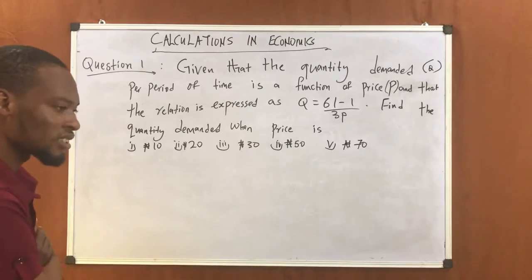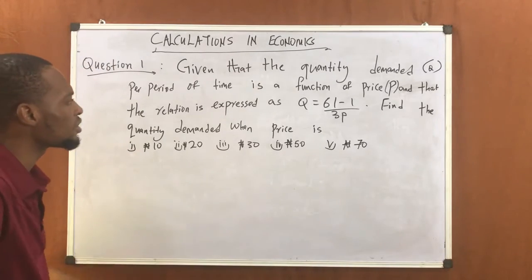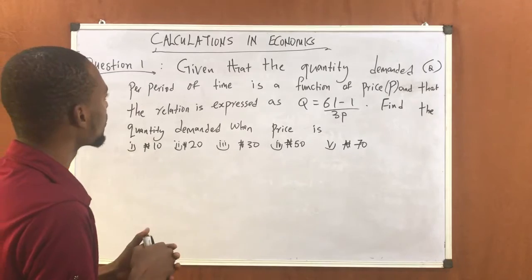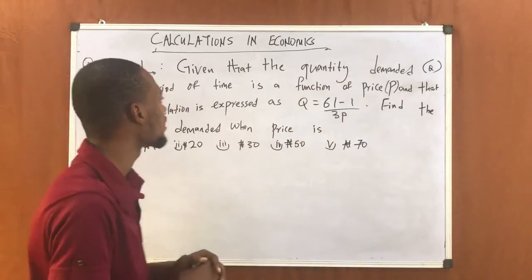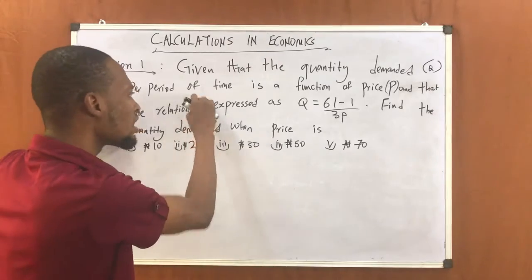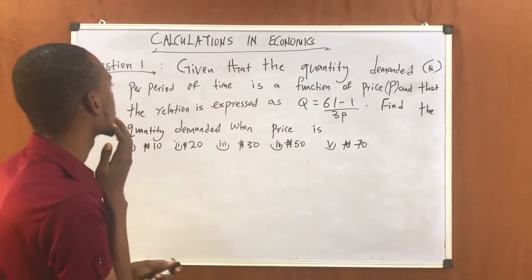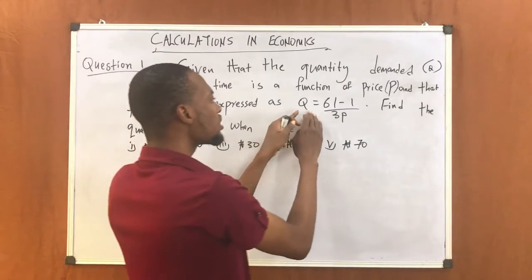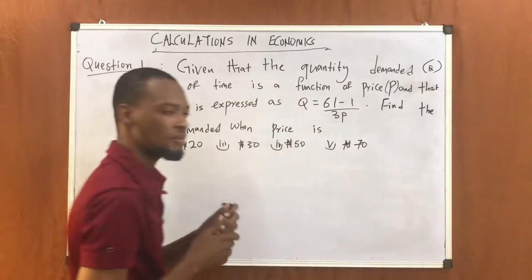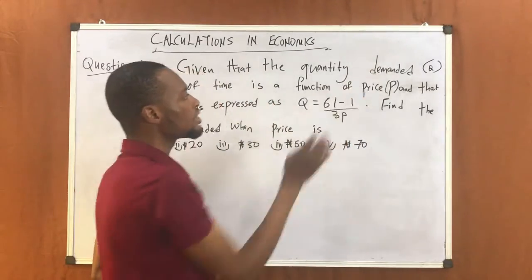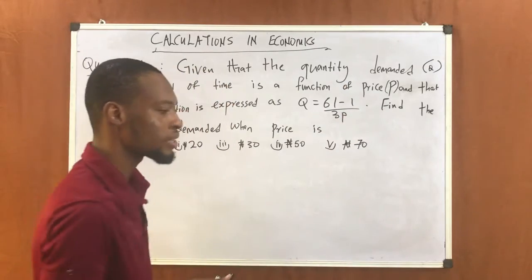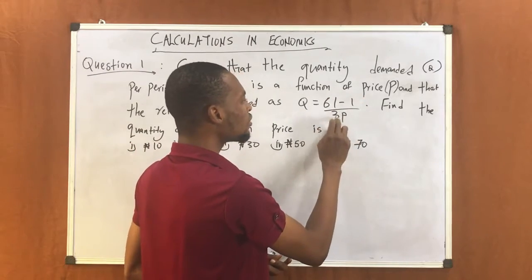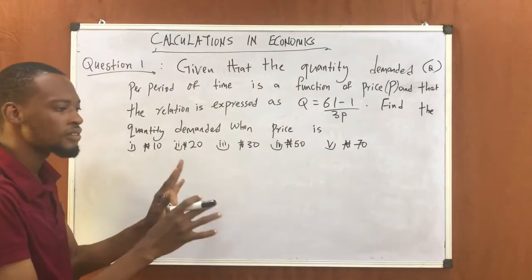When you see something like this, the first thing you should do is observe the question and try to understand. From this question, we are told that a quantity is demanded for a period of time and there is a price. They are showing that the relation is expressed as this, meaning this is the relationship between the quantity and the price. This is Q — quantity demanded — and this is P, which is the price. So quantity demanded is equal to 61 minus 1, all over 3P. That's what is relating them.